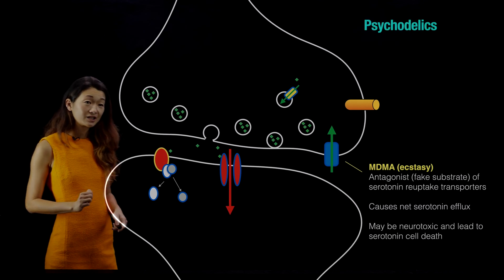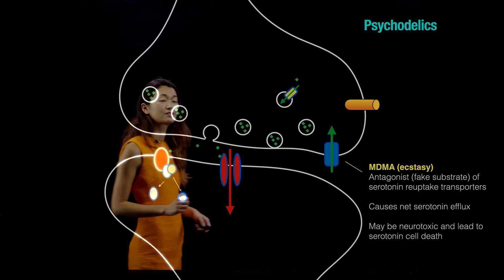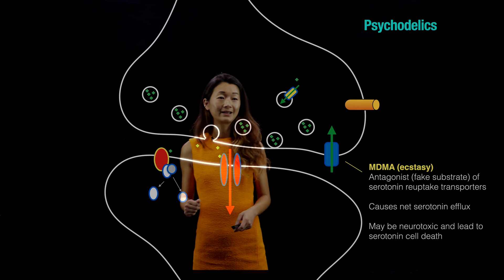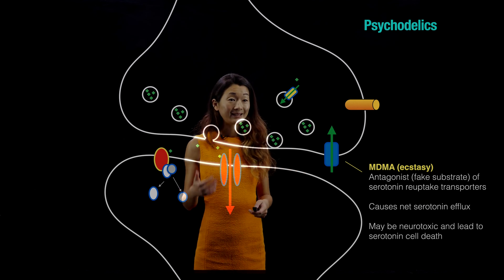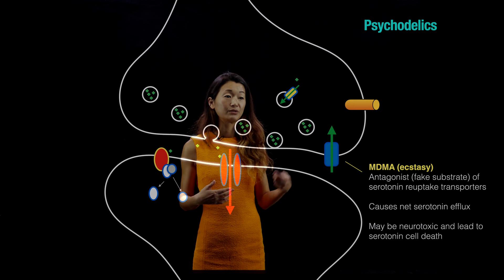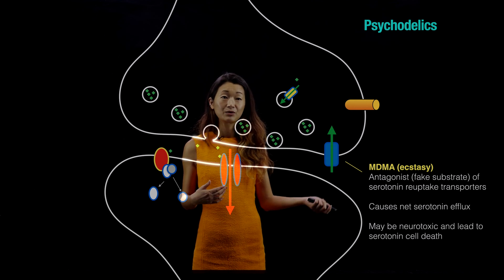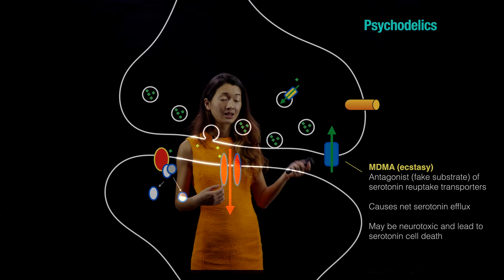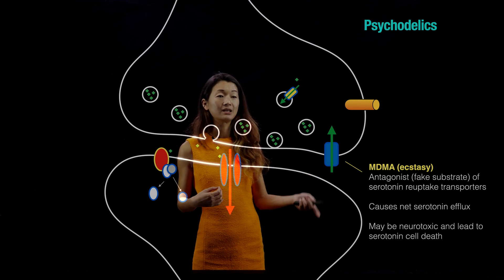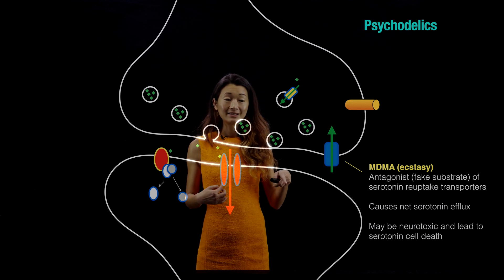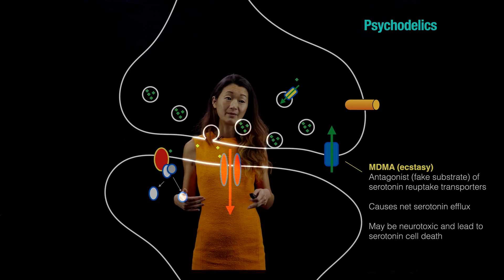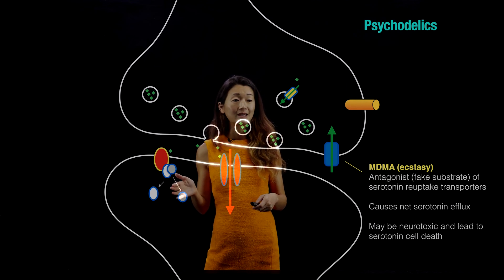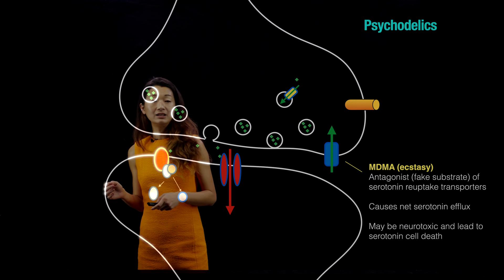It's not just postsynaptic receptors that are targets of recreational drugs. MDMA is an antagonist or false substrate of the serotonin reuptake transporters — just like dopamine reuptake transporters are blocked by cocaine, MDMA blocks the reuptake of serotonin, causing a net serotonin efflux with more serotonin coming out. In large concentrations, however, beware: it has been documented that MDMA can be neurotoxic and lead to serotonin cell death, and you do not want your serotonin cells to die.